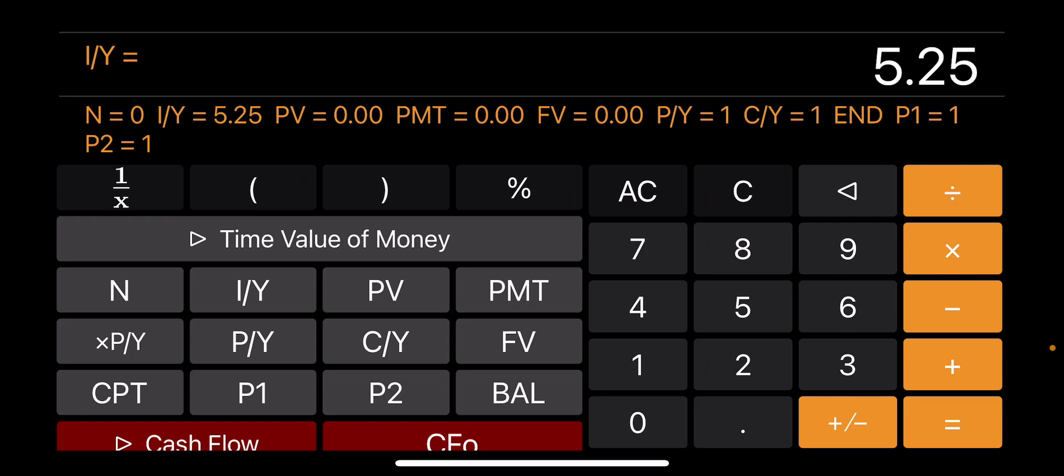So for example, for a 30-year loan, since you pay the loan 12 times a year for 30 years, it's going to be 30 times 12, which is 360 for N. The present value is, for example, if you're calculating mortgage, it could be the present value of the loan. For example, if you are borrowing $500,000, you can enter $500,000 as present value.